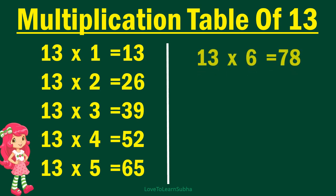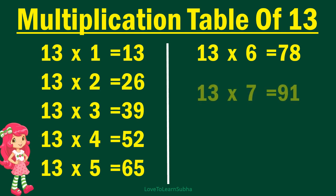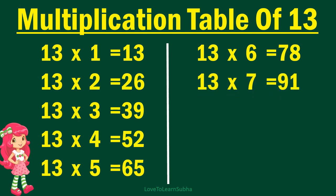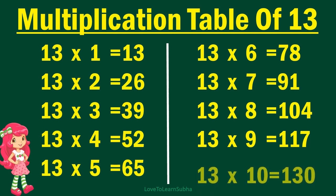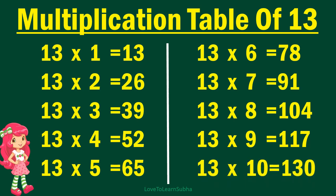13 sixes are 78, 13 sevens are 91, 13 eights are 104, 13 nines are 117, 13 tens are 130.